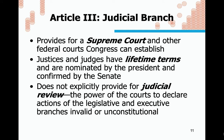Article III sets out the Judicial Branch, providing for a Supreme Court and other federal courts that Congress can establish — so the Supreme Court is really the only court spelled out in the Constitution. Justices to the Supreme Court and judges in other federal courts have lifetime terms; they're nominated by the president and confirmed by the Senate. The Constitution does not explicitly provide for judicial review — the power of the courts to declare actions of the legislative and executive branches as invalid or unconstitutional.